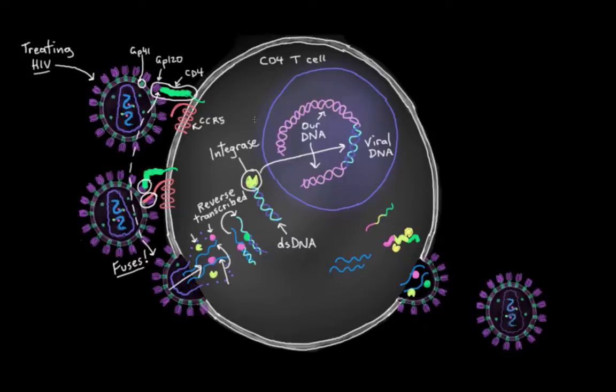Then our cell starts to crank out viral RNA, all sorts of viral RNA. It actually doesn't have to. Sometimes it kind of lays low and doesn't do anything because it wants to avoid our immune system. But in this case, it starts to crank out all sorts of viral RNA.